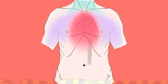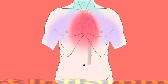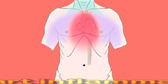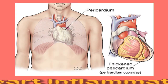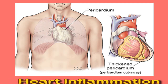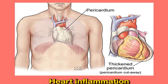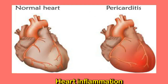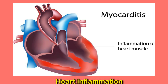These symptoms may extend to the neck, jaw, arms, shoulders, and back. Heart inflammation is the immune system's natural response to disease, injury, and infection. Types of heart inflammation include pericarditis, which refers to inflammation of the pericardium — the membrane that surrounds the heart; myocarditis, which is inflammation of the heart muscle; and endocarditis, which causes inflammation of the endocardium that lines the inside of the heart chambers and valves.